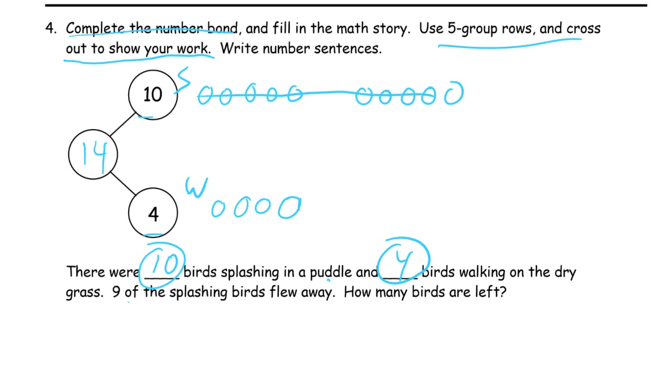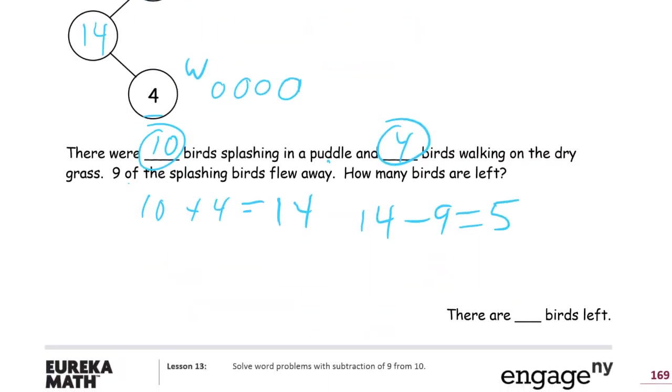The number sentences we're going to write are that we had 10 plus 4 equaled 14, right? That's how we figured out our whole for how many birds there were. But then we also had to figure out 14 minus 9 to figure out how many birds were left. If there's 14 total birds, 9 flew away, and we figured out that there are 5 left. And there's our answer. There are 5 birds left.